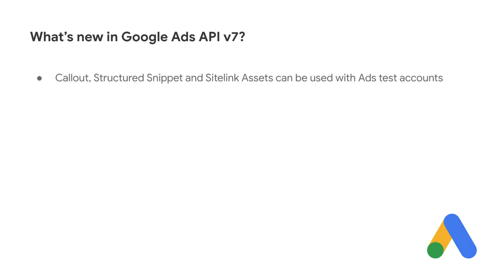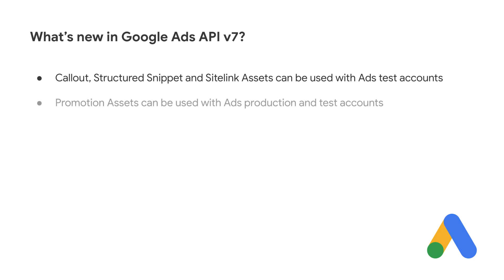There are three new asset types available for use with ads test accounts: Callout, Structured Snippet, and SiteLink assets. We've also added support for promotion assets to production and test accounts.